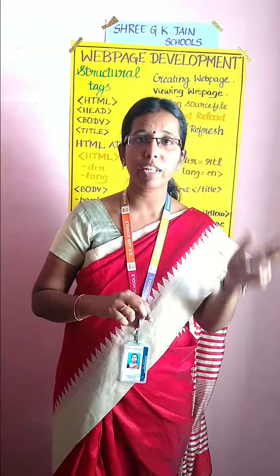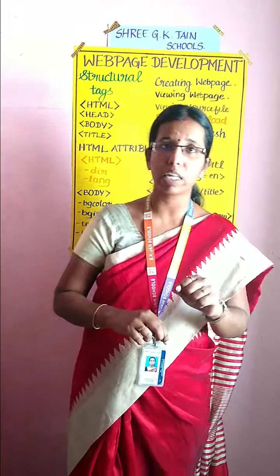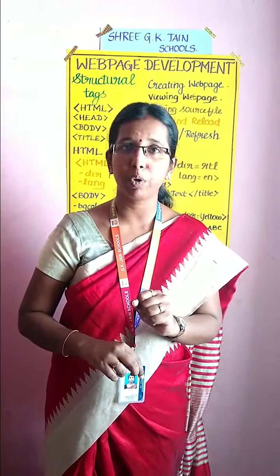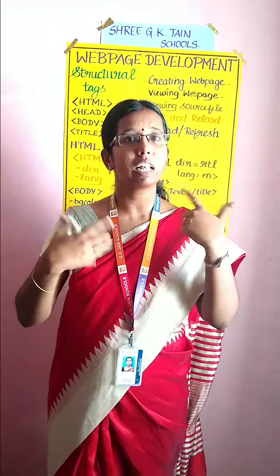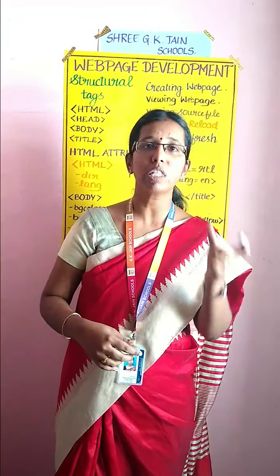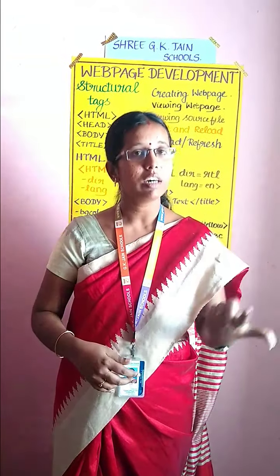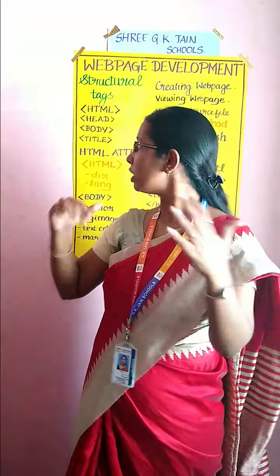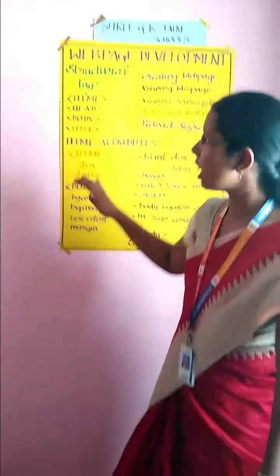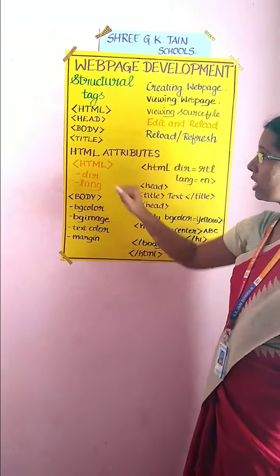Attributes are nothing but a special word that is used to specify additional information to the tag. For example, if I am using an HTML attribute, I want to specify additional information like the language or alignments. So I have to use this attribute as a special word or keyword inside the HTML tag itself to give additional information to the document. With no more delay, we will move into the topic.